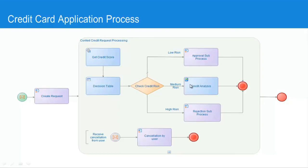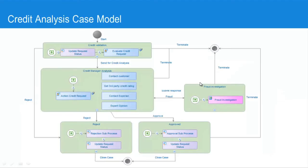If we drill down into the credit analysis phase, what we see is a case model which has a number of states. We start at the top and the credit validation phase is simply displaying some data to a user for them to decide that this credit application is a valid one.